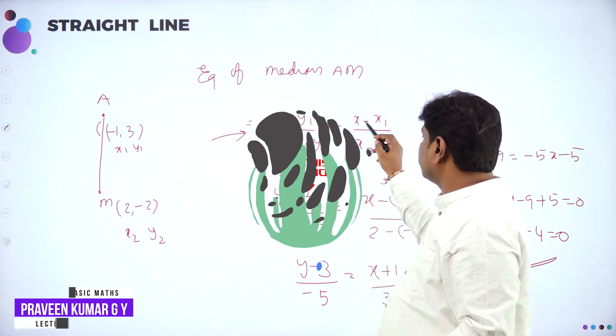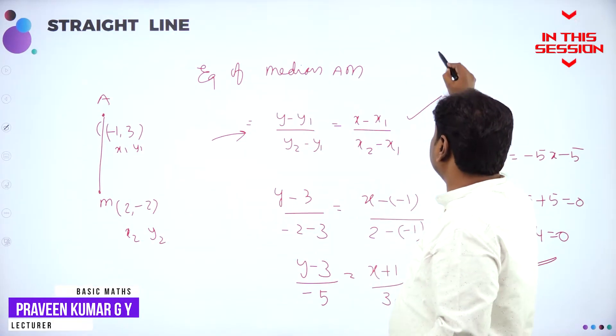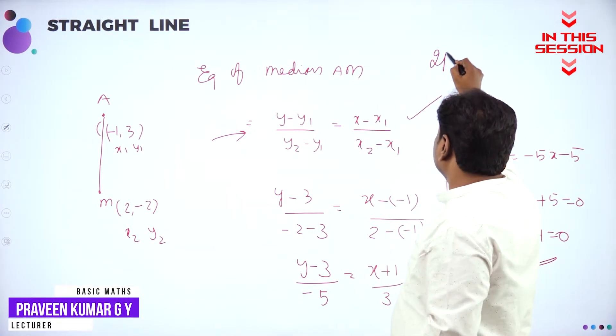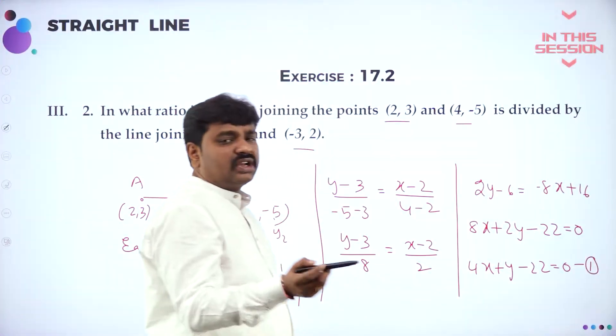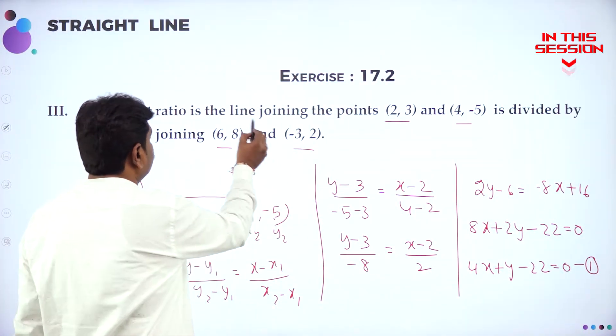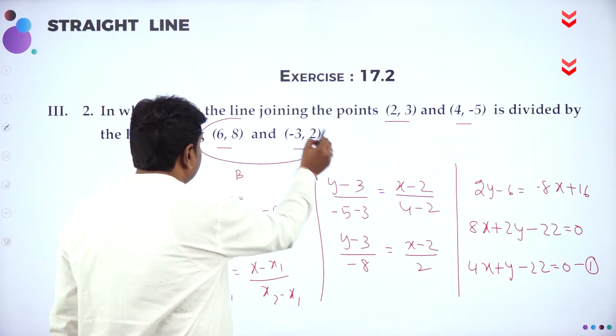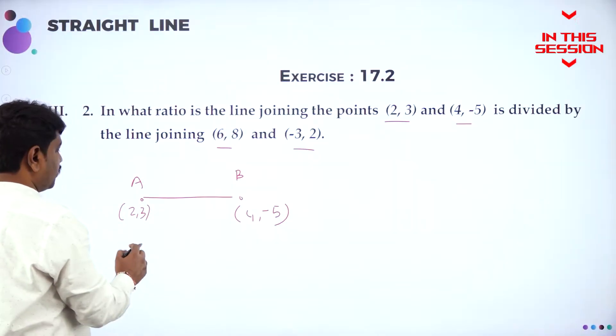The two-point form of a line is: (Y minus Y1) divided by (Y2 minus Y1) equals (X minus X1) divided by (X2 minus X1). We call this the two-point form of a line. Similarly, you can frame other line equations using two points.